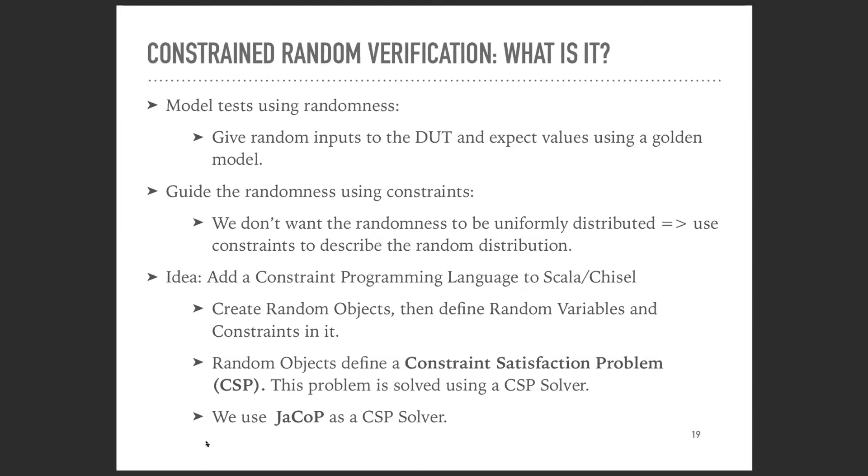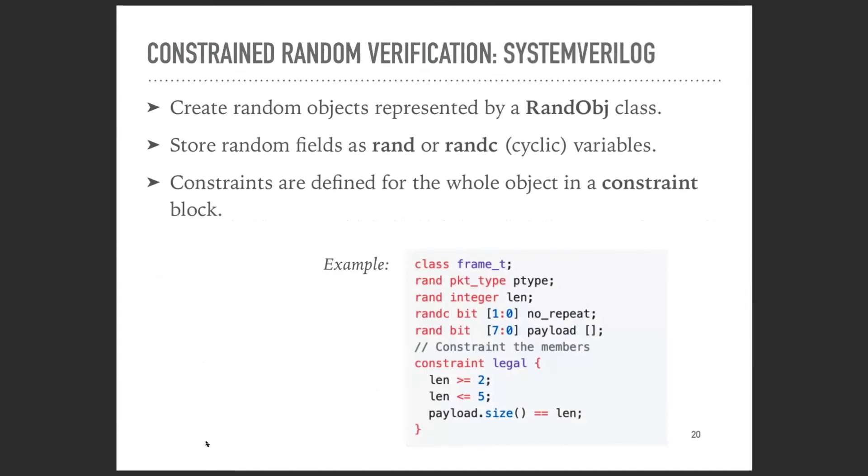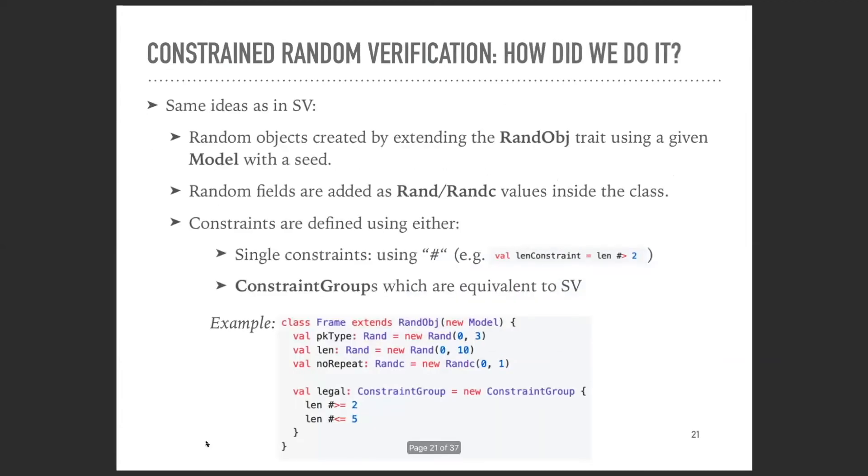We can define random objects, random variables, and our constraints. A random object defines a constraint satisfaction problem, which is then solved using the JaCoP CSP solver, which is a preexisting Java CSP solver. This is a quick overview of how it's done in SystemVerilog. The idea is we define a class that contains rand or randc variables. The difference is randc is cyclic, meaning it can't take the same value twice, and rand can take any value within its bit width. Constraints are defined using a constraint block. The way we did this in Scala is we define a class that extends our rand object. Random fields are defined as either rand or randc values within this class and can be associated to constraints, either single constraints or constraint groups, which are the same as the constraint block in SystemVerilog.